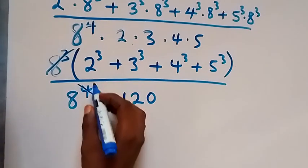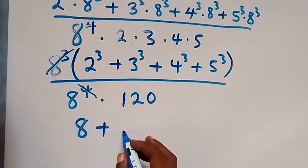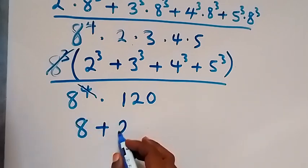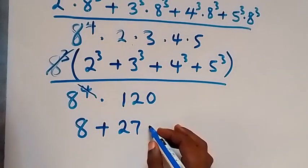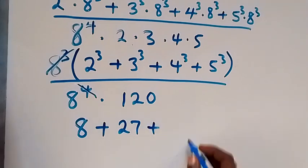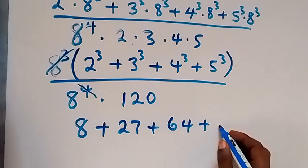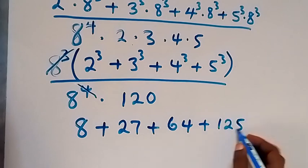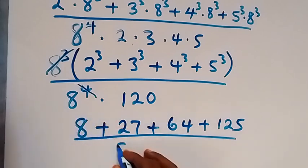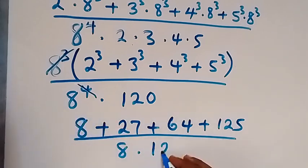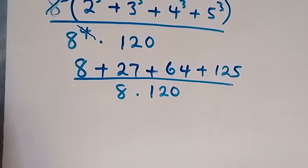Now we compute the cubes: 2 raised to power 3 is 8, plus 3 raised to power 3 is 27, plus 4 raised to power 3 is 64, plus 5 raised to power 3 is 125, then all divided by 8 times 120.